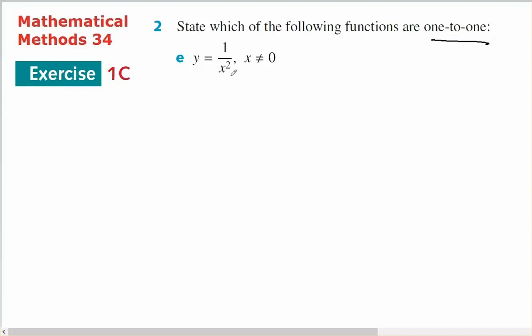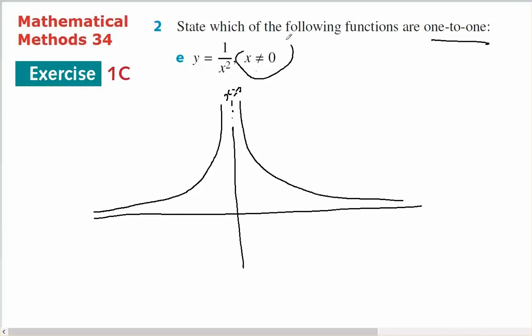Okay, so I've got y equals 1 over x squared. That is a curve in this form. And there's an asymptote at x equals 0, which is why we have a restricted domain.